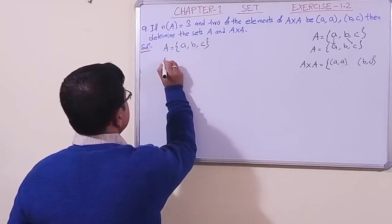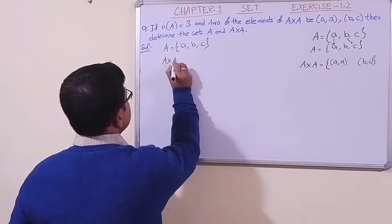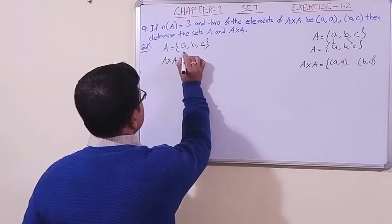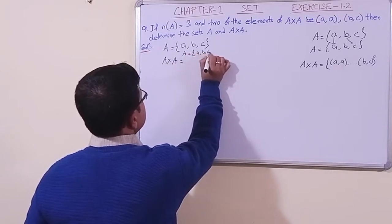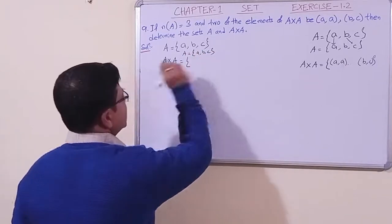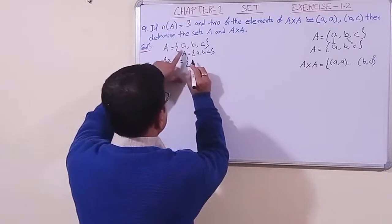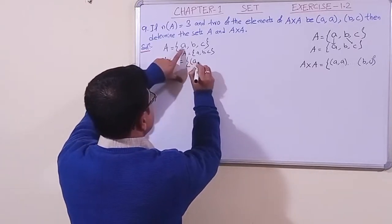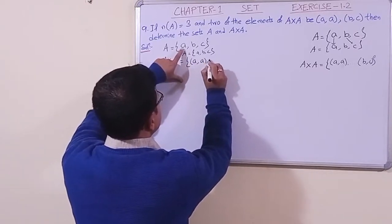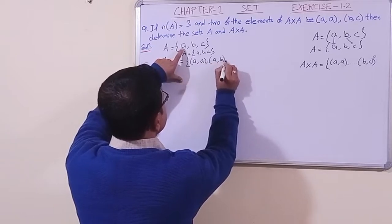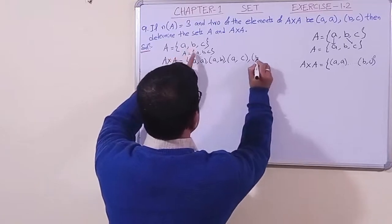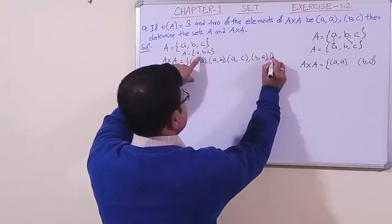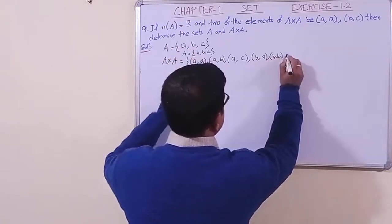So A cross A will be (a, a), (a, b), (a, c), okay. Then with b: (b, a), (b, b)...